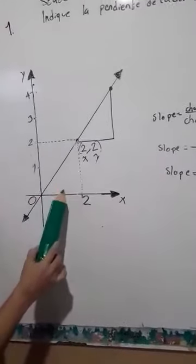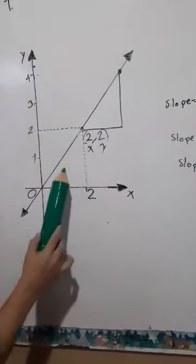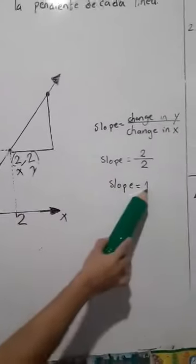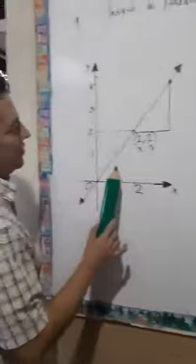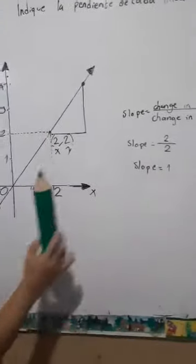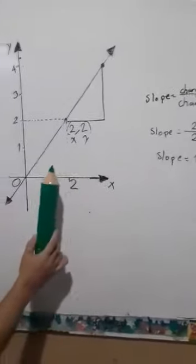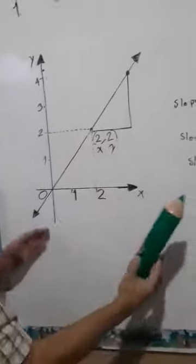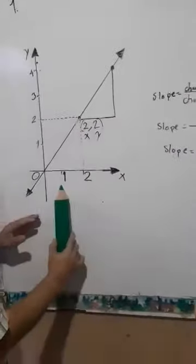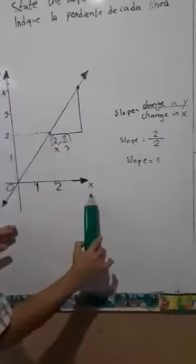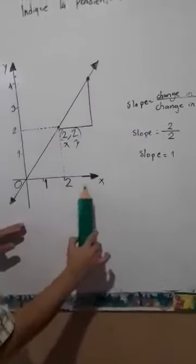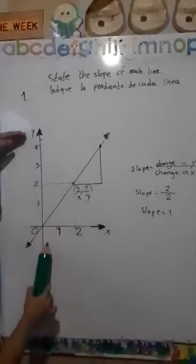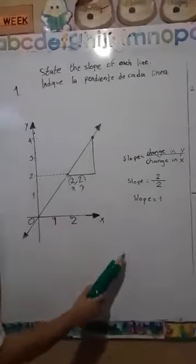Si usted observa más o menos este ángulo que está acá, es de 45 grados. Entonces, la tangente de 45 grados es 1. Eso es importante comprenderlo o considerarlo a la hora de hacer gráficas que hacen una relación, a relationship between values en x. Valores en el x-axis y valores en el y-axis. Let's go.